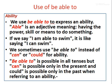Use of 'be able to' — Ability: we use 'be able to' to express an ability. 'Able' is an adjective meaning having the power, skill, or means to do something. If we say 'I am able to swim,' it is like saying 'I can swim.' We sometimes use 'be able to' instead of 'can' or 'could' for ability. 'Be able to' is possible in all tenses, but 'can' is possible only in the present and 'could' is possible only in the past when referring to an ability.